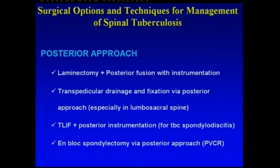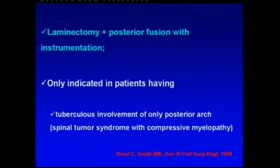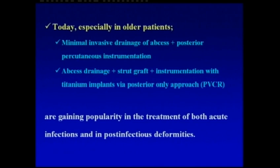Posterior approach options are laminectomy with posterior fusion and instrumentation, transpedicular drainage, fixation via posterior approach, TLIF procedure for TB spondylodiskitis, and PBCR. Laminectomy with posterior fusion and instrumentation is only indicated in patients with tuberculosis involvement of only the posterior arch, so-called spinal tumor syndrome with compressive myelopathy. Today, especially in older patients, minimally invasive drainage of abscess with posterior percutaneous instrumentation, called PBCR, is gaining ongoing popularity in treatment of both acute infection and post-infection deformity.